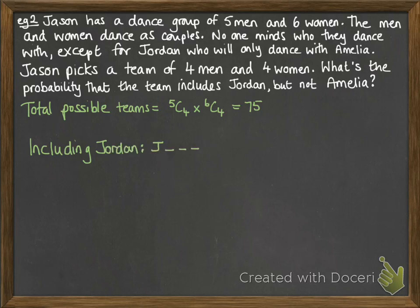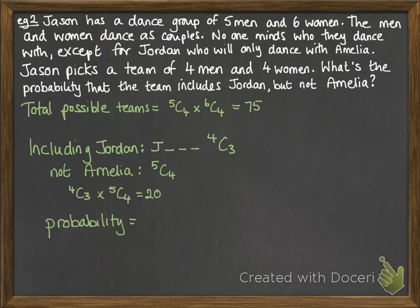Including Jordan means Jordan and three others from the remaining four men — so four choose three. Not including Amelia means we only have five women to choose from, and we're choosing four of them — so five choose four. That gives our probability, which cancels down to four-fifteenths.